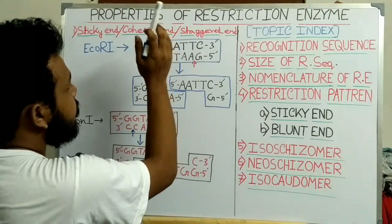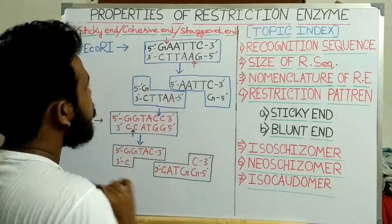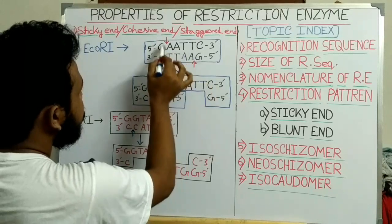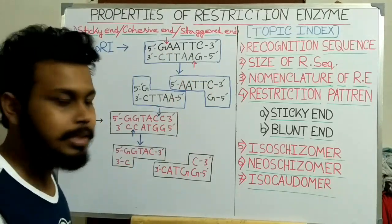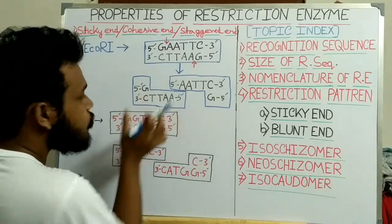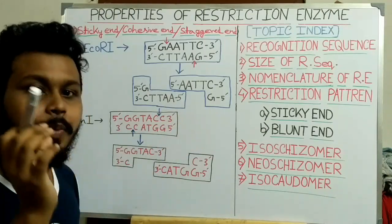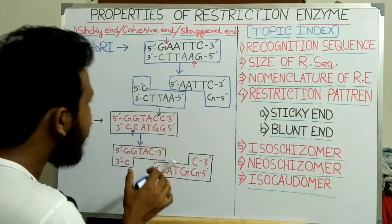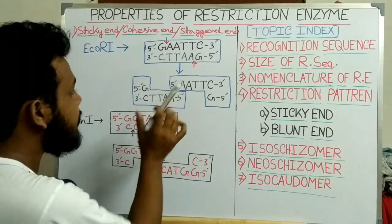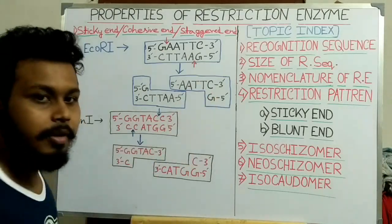You can see that this is not a parallel cut — they do not cut in the same position of the DNA. They cut in different positions, and then two fragments are produced. There is a short single-stranded overhang present. As there is a 5' phosphate group at the end position, this single-stranded overhang structure is called the 5' overhang.